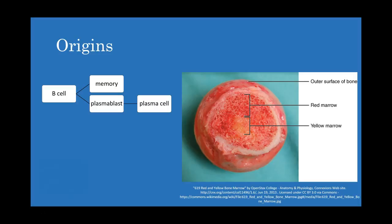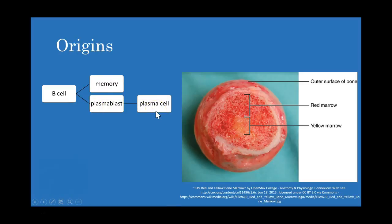A while later, these plasmablasts fully mature into plasma cells, which can produce hundreds if not thousands of antibodies per second when activated — which is really amazing. Regarding the different classes of immunoglobulins: there's IgA, IgM, IgG, and IgE. They're essentially doing the same thing but are slightly differently shaped with slightly different mechanisms. What determines whether plasma cells make IgA or IgE really depends on the milieu when the B cell is activated.